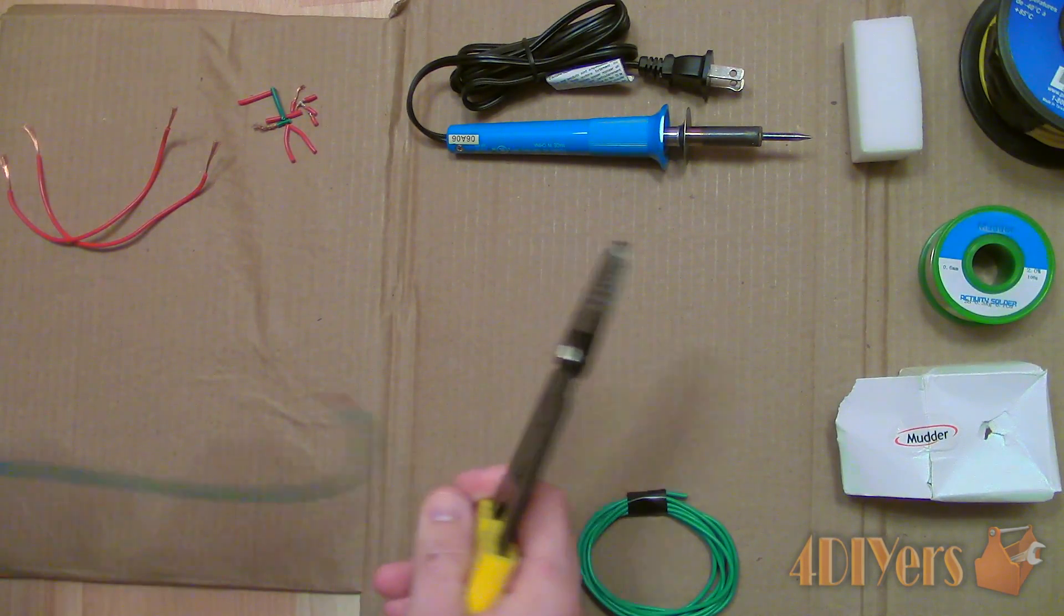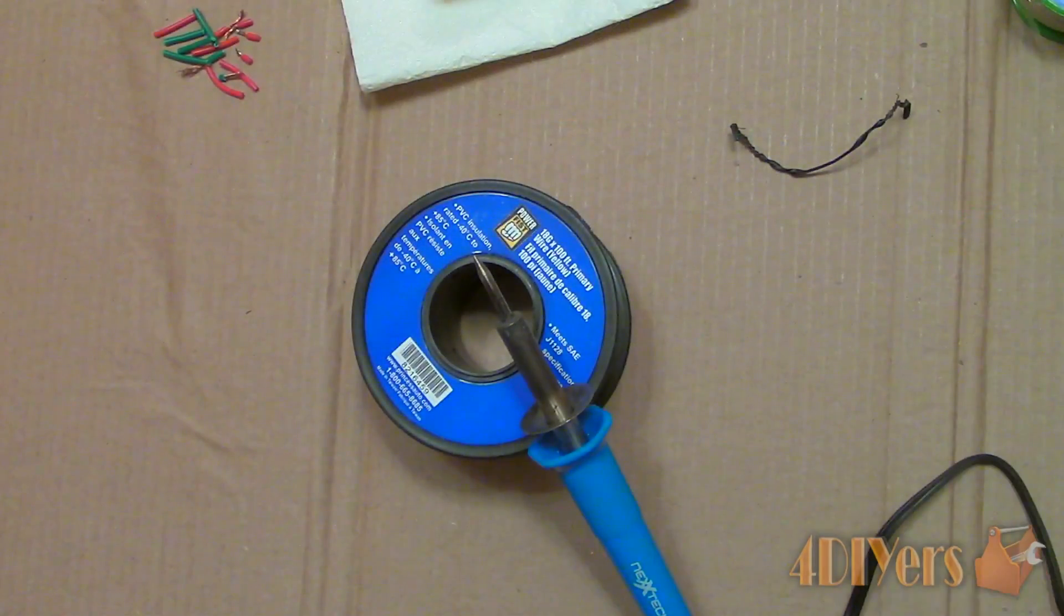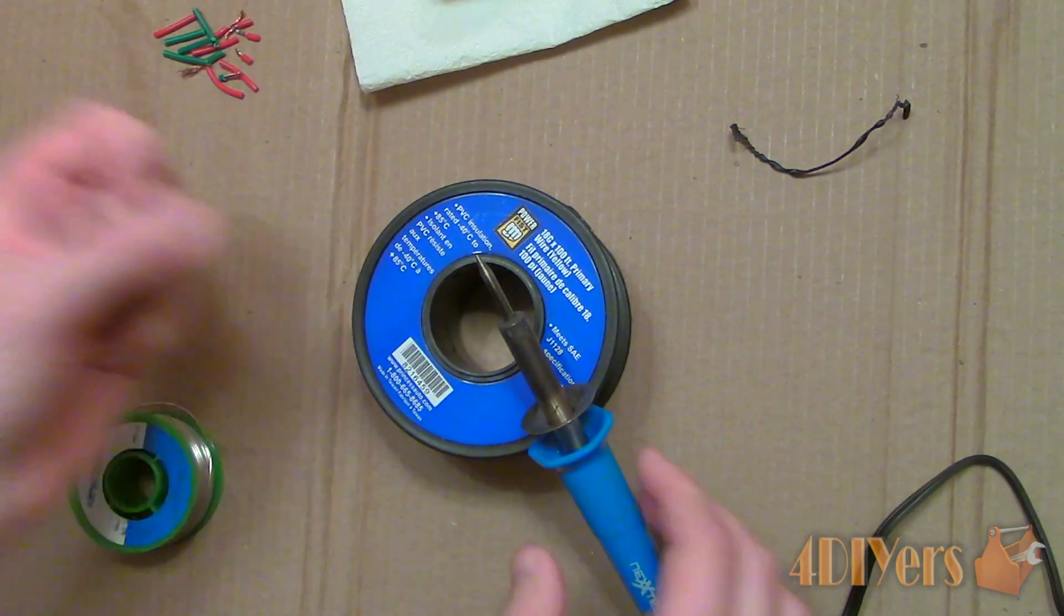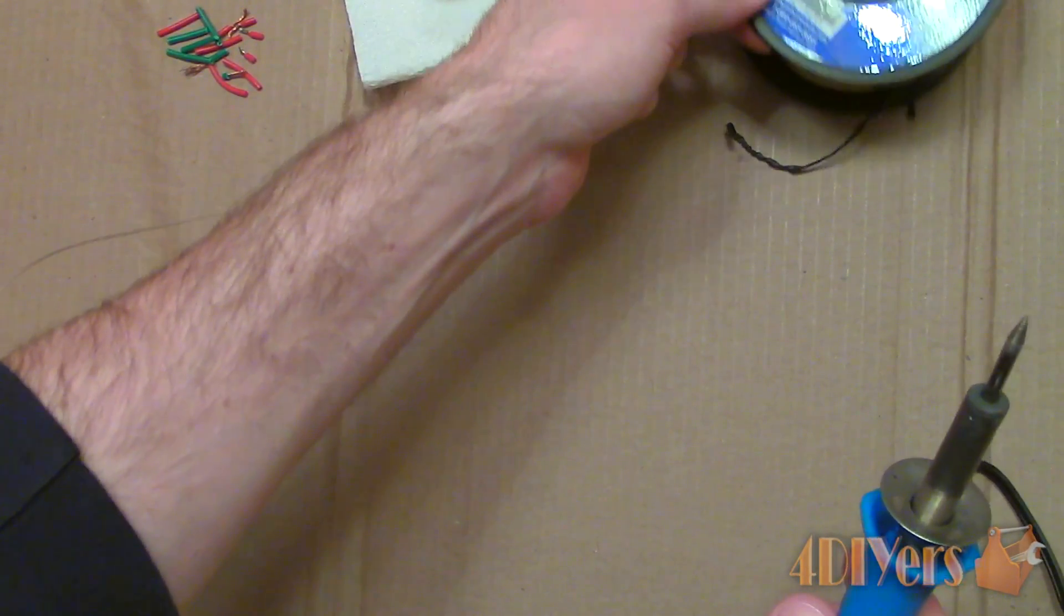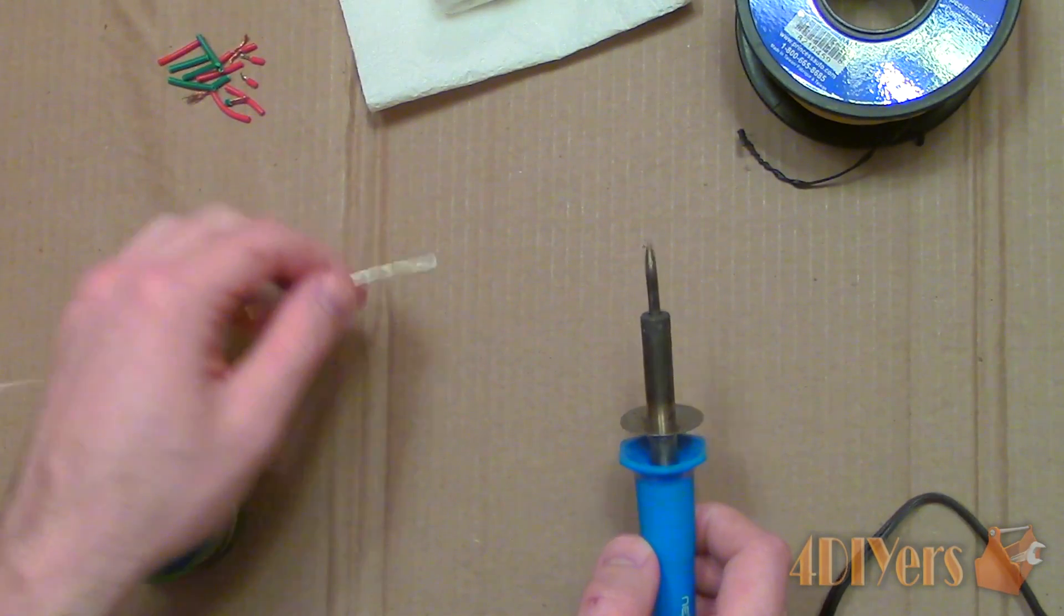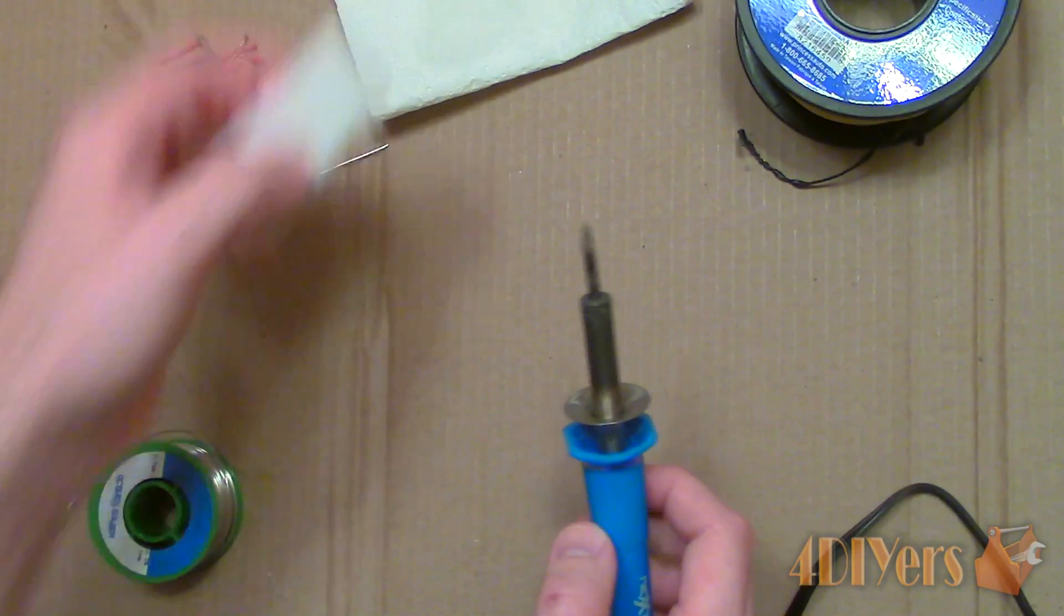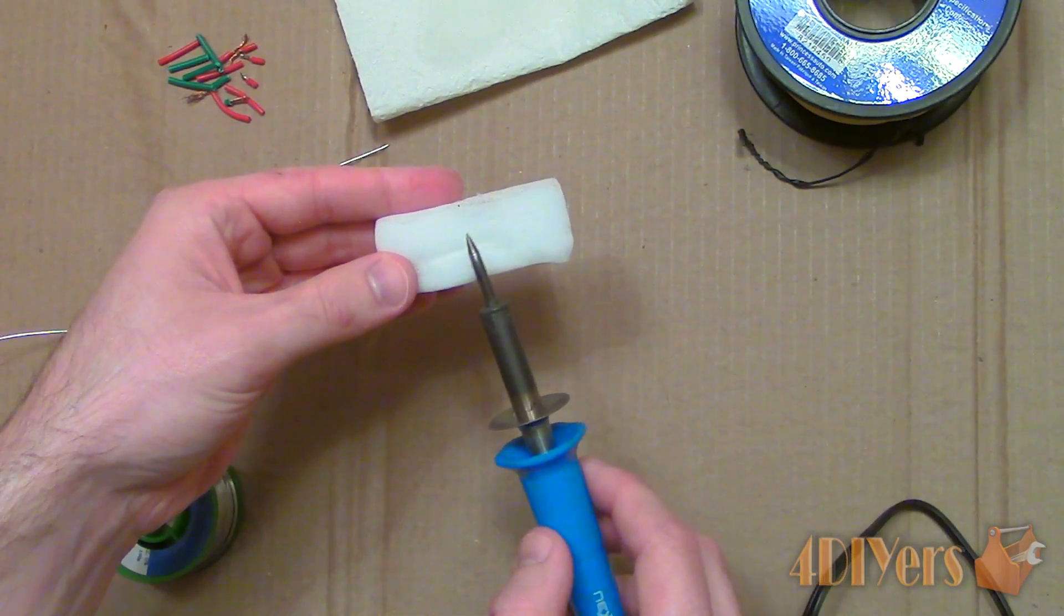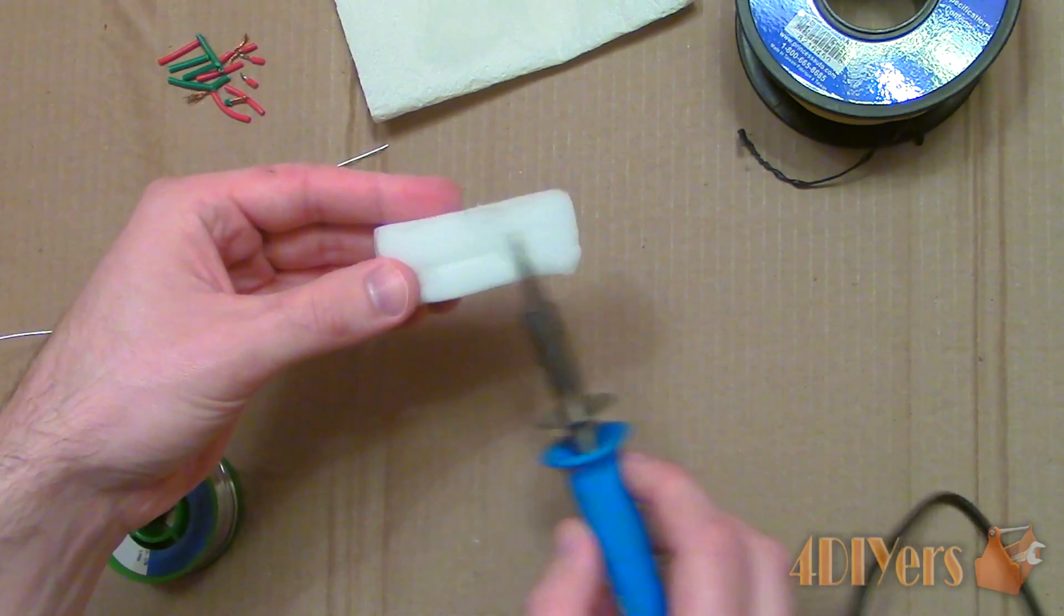First we need to allow the soldering tool to come up to temperature. It is best to work in a well ventilated area as we do not want to breathe in the fumes. I would also recommend wearing safety glasses. Always clean the soldering iron's tip before and after usage. This is done by heating up the tip, then rubbing it on a wet sponge. If this isn't done, this will cause heat transfer problems along with introducing impurities into the solder joint.